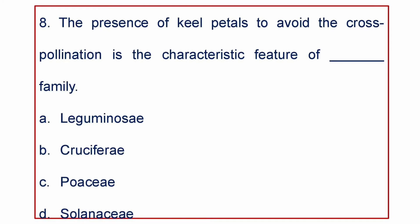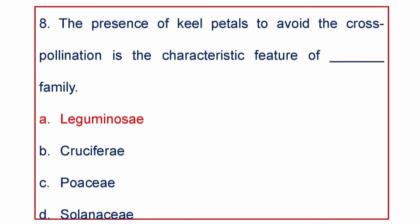Next question: the presence of keel petals to avoid cross-pollination is the characteristic feature of which family? A) Leguminaceae, B) Cruciferae, C) Poaceae, or D) Solanaceae. The answer is Leguminaceae.